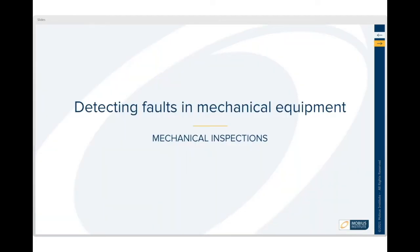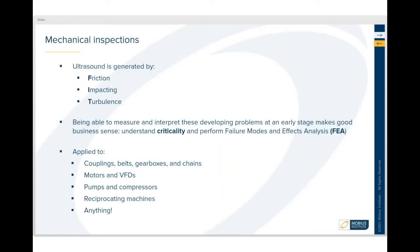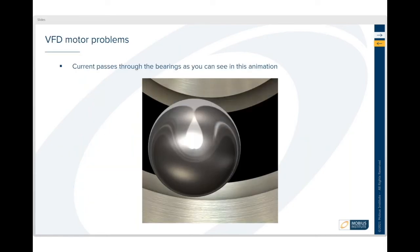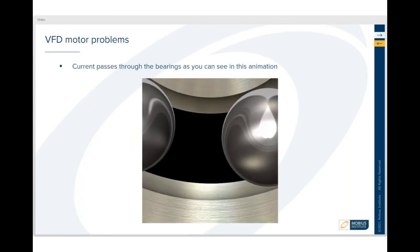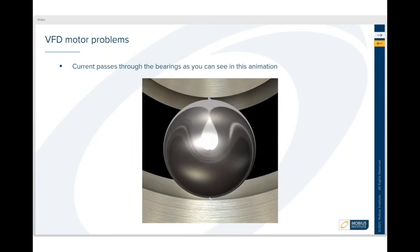There's a lot to learn. We've got all kinds of mechanical inspections we can perform knowing that we can detect friction, impacting, and turbulence. There's a whole range of different fault conditions we can detect. In this case we're looking for arcing. We've got problems with a variable frequency drive. Current passing through the bearing. And you can see the little spark there. And it's causing damage to the bearing.